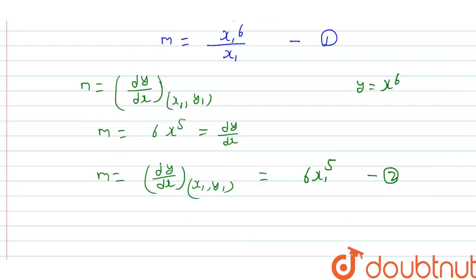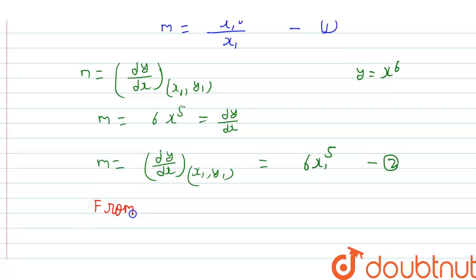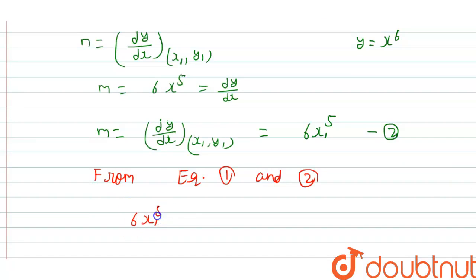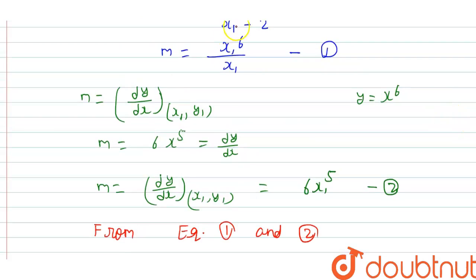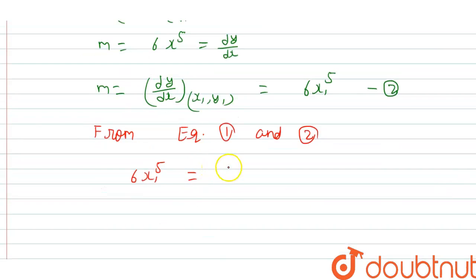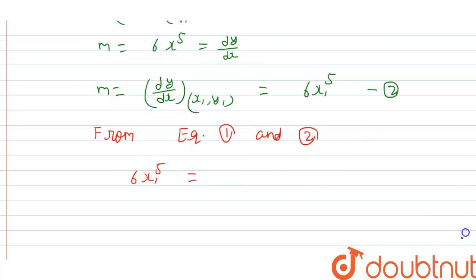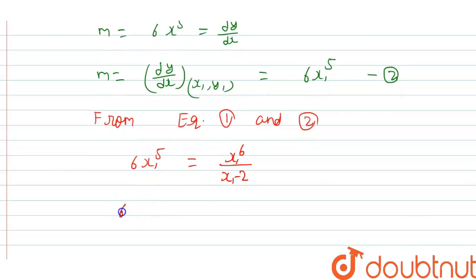From equations 1 and 2: 6x1⁵ = x1⁶ / (x1 − 2). Cross-multiplying: 6x1⁵ · (x1 − 2) = x1⁶, which gives 6x1⁶ − 12x1⁵ = x1⁶.